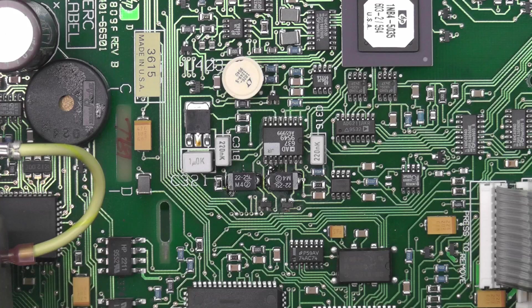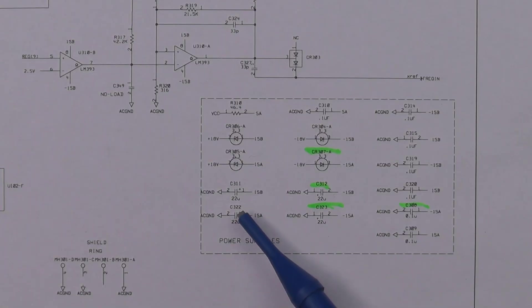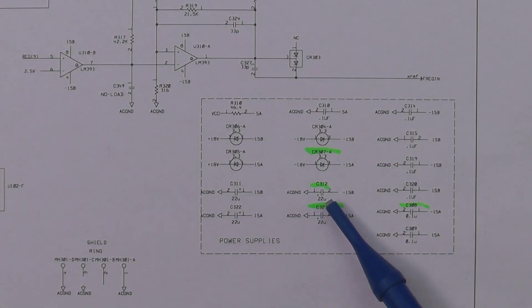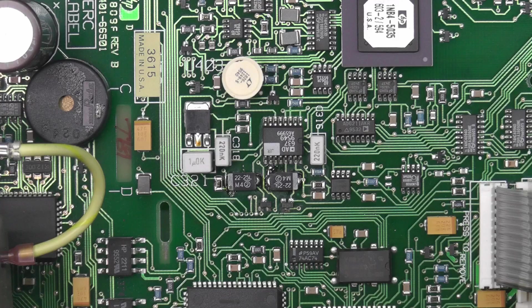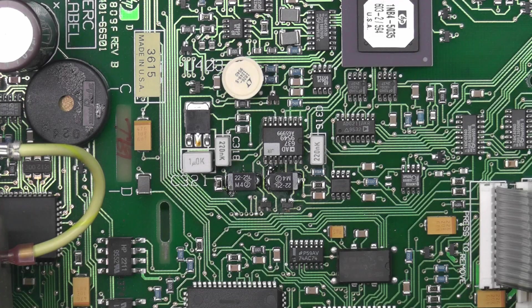Before I power up, I'd like to know whereabouts in the circuit those two capacitors are. Let's pull out the schematic diagrams. There they are: C311 and C312, basically just across the plus and minus 15 volt rail in and around the AC circuit. Let's power it up and measure the voltages across those capacitors.